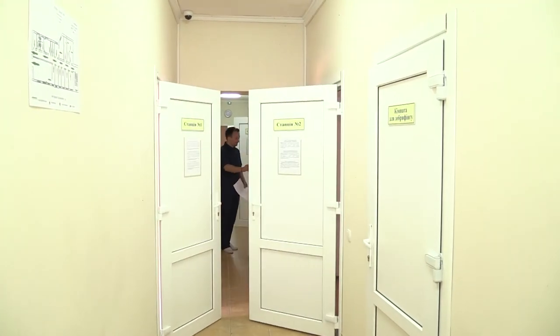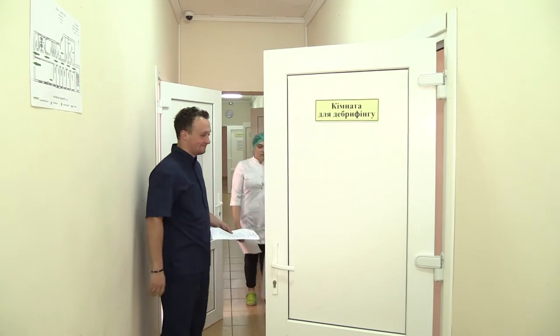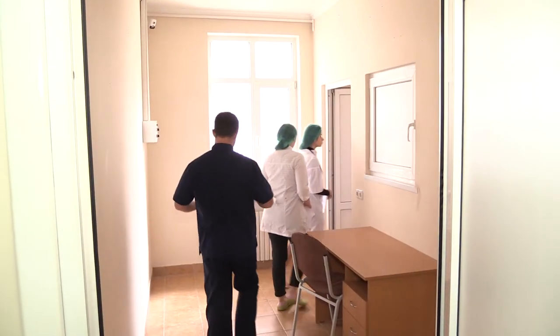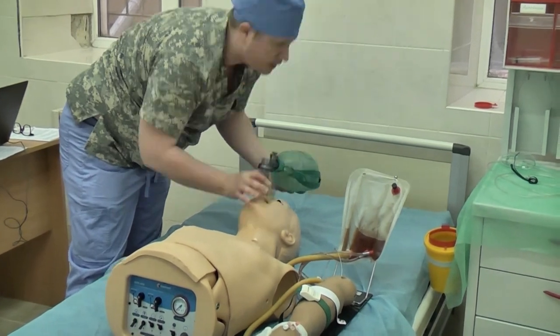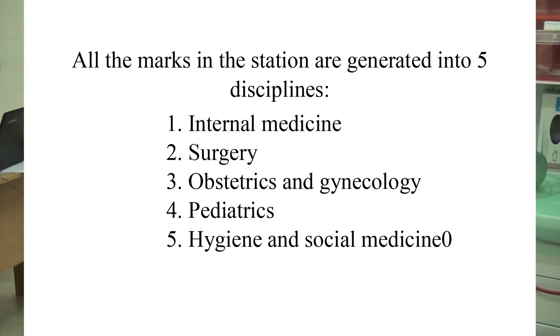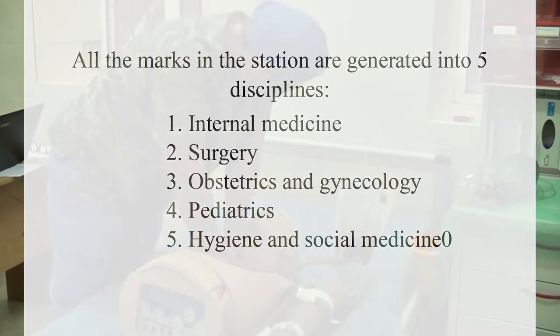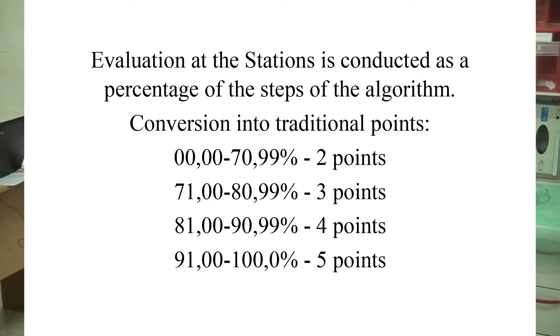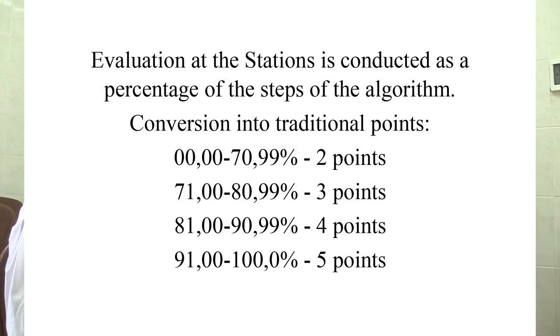Immediately after the exam, students move to the debriefing room where results are announced. The exam is considered passed if the student's score exceeds 71% of the maximum points at each station. Final scores are set by the examination committee on 4-point and 200-point scales. The student receives five grades for five disciplines: internal medicine, surgery, pediatrics, obstetrics and gynecology, and hygiene and social medicine. The final grade is the average score across all stations for each discipline. If a student disagrees with a station assessment, they may file an appeal reviewed via video recording.